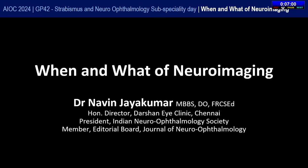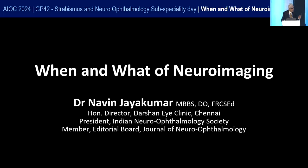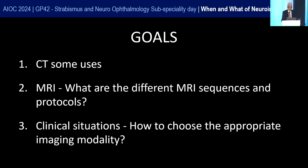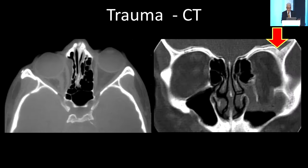Good afternoon. The topic I was given is about eight minutes — when and what of neuro-imaging. The goals of today's talk are to describe some uses of CT, the different MRI sequences and protocols, and when we can deploy them appropriately in different clinical situations. CT still has use, although a lot of us just talk about MRI — most importantly in orbital disease.